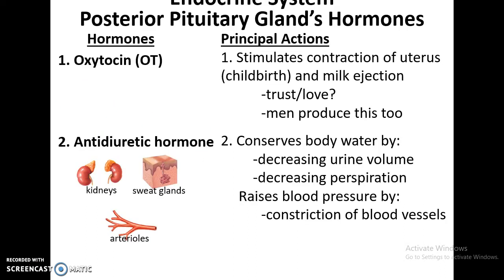Then there's antidiuretic hormone, used to help conserve body water. It decreases urine volume, decreases perspiration, and leads to the constriction of blood vessels — because if we're conserving water, our blood volume has gone down, blood pressure has gone down, and constricting the blood vessels will help raise blood pressure.